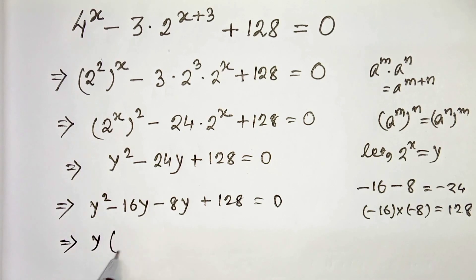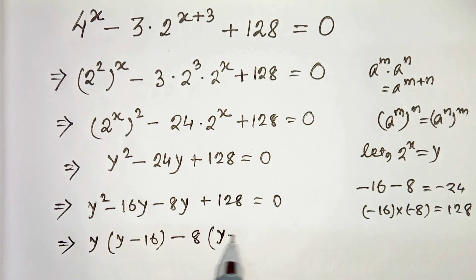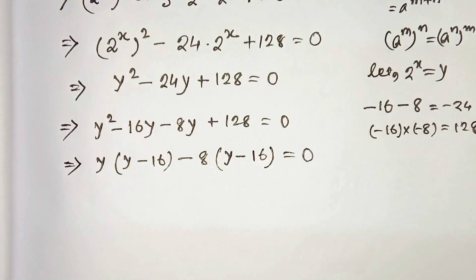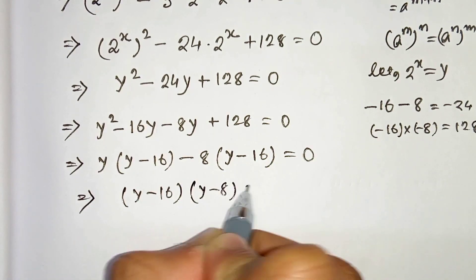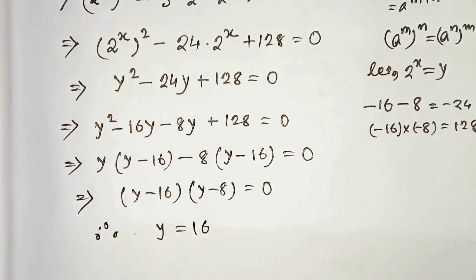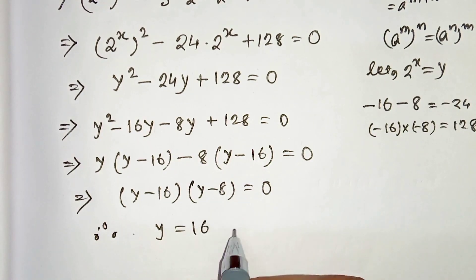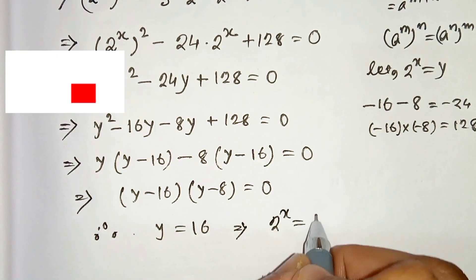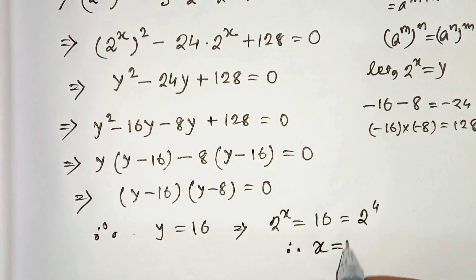Now we take y as common from the first two terms: y times y minus 16, and take 8 as common from the last two terms: minus 8 times y minus 16, equals 0. In the next step we get y minus 16 times y minus 8 equals 0. Therefore we have two values of y. Since we set 2 to the power x equal to y, we can write 2 to the power x equals 16, and since 16 is 2 to the power 4, therefore x equals 4.